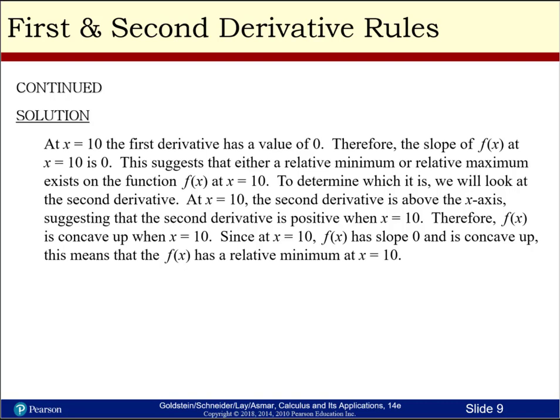To determine which it is, we look at the second derivative. At x equal 10, the second derivative is above the x-axis, suggesting it is positive when x equals 10. Therefore, f of x is concave up when x equal 10. Since f of x has a slope of zero and is concave up at x equal 10, this means that f of x has a relative minimum at x equal 10.